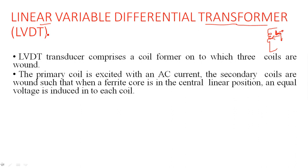The LVDT transducer comprises a coil former onto which three coils are wound. The primary coil is excited with an AC current. There are two secondary coils — primary is a single coil and secondary has two coils. These secondary coils are wound such that when a ferrite core is in the central linear position, equal voltage is induced into each coil.